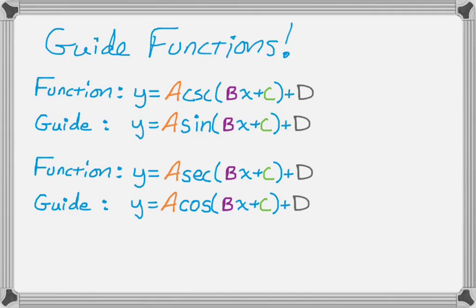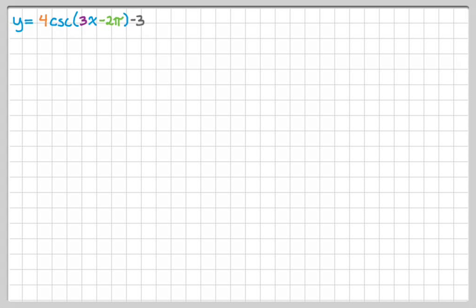So that's what we're going to do to graph these. Let's do an example. So let's say I want to graph y equals 4 cosecant of 3x minus 2π and then the whole thing minus 3. So the guide function is just going to be y equals 4 sine of 3x minus 2π and then the whole thing minus 3.